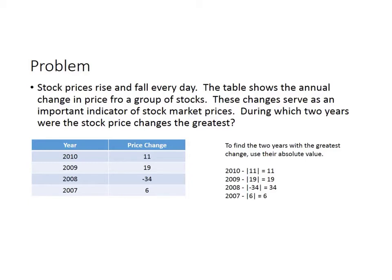All it's asking for is change. Now change can be positive or negative — it's just a change. So we can look at the absolute value of the price changes. In 2010, the change is the absolute value of 11, so it would be 11. In 2009, the change — how far it went from where we expected it to be — was 19. In 2008 it dropped 34, but it still changed 34. And in 2007 it changed 6 units.